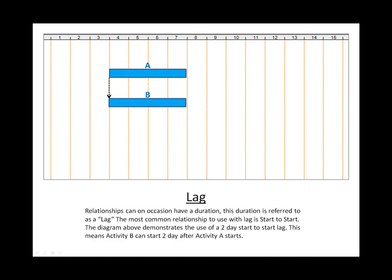One last quick thing about relationships before we get into the actual calculation part is lag. Relationships can on occasion have duration. This duration is referred to as lag. The diagram above demonstrates the use of a two day start to start lag. This means that activity B can start two days after activity A starts.